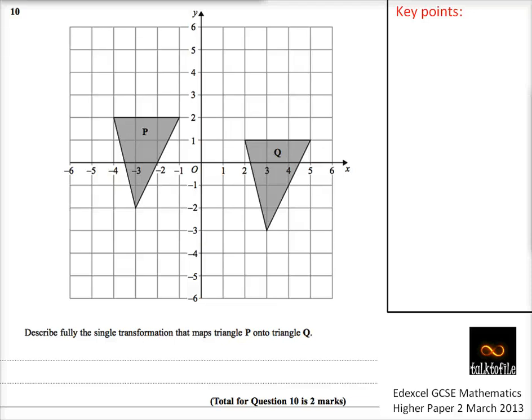Okay, so here we go. Question number 10. We've got a diagram here, which is lovely, coordinate axes, and we've got two shapes, P and Q. Describe fully the single transformation that maps triangle P onto triangle Q.